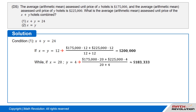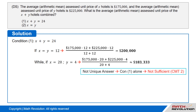Condition 1 tells us that X plus Y equals 24. If X equals Y equals 12, we get ($175,000 × 12 + $225,000 × 12) / (12 + 12) = $200,000. But if X equals 20 and Y equals 4, we get ($175,000 × 20 + $225,000 × 4) / (20 + 4), which equals approximately $183,333. Since the answer is not unique, condition 1 is not sufficient by CMT2.